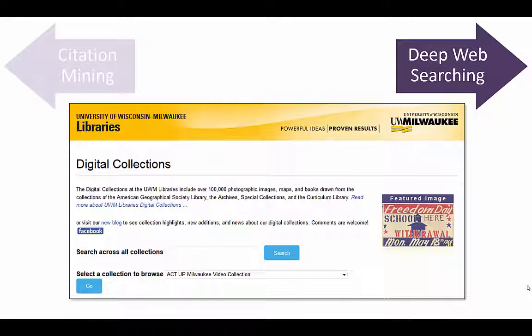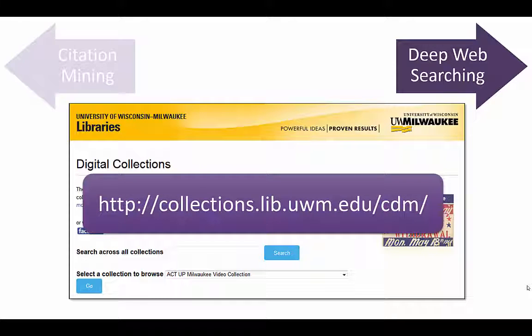UWM libraries have a lot of other digital collections, in addition to the award-winning March on Milwaukee collection. These may be a good starting point for your primary source research.